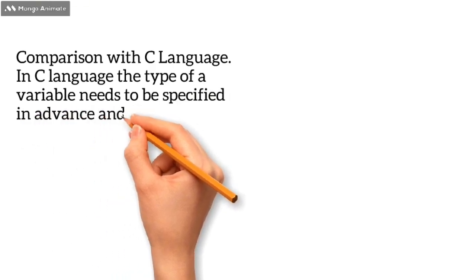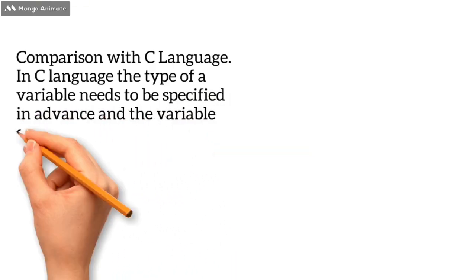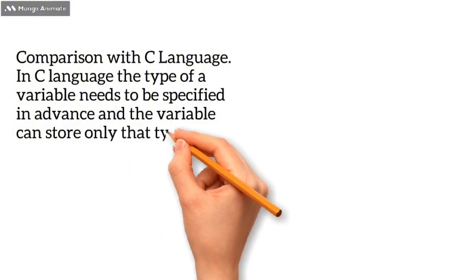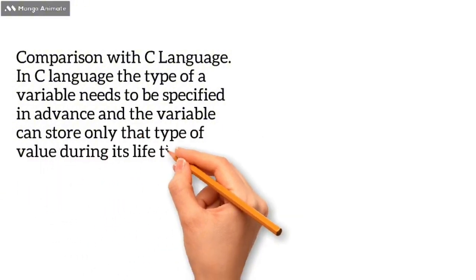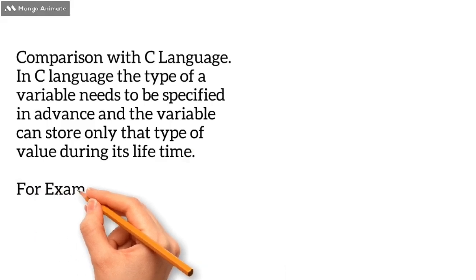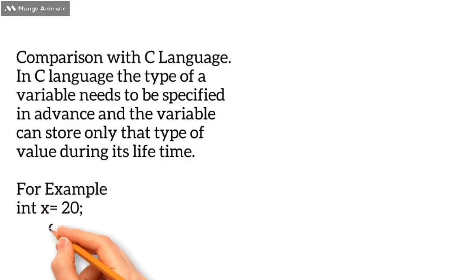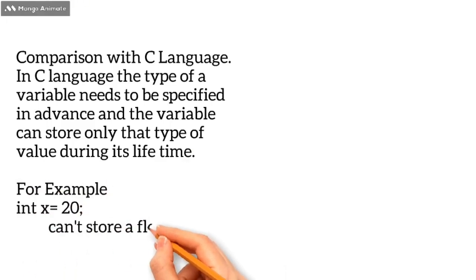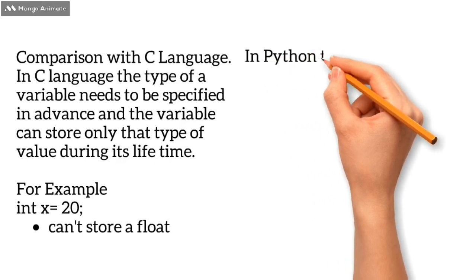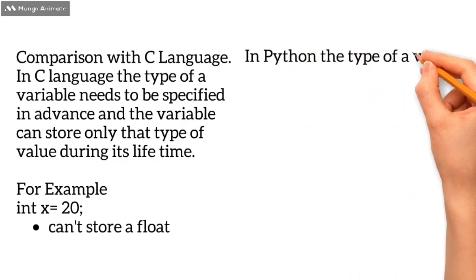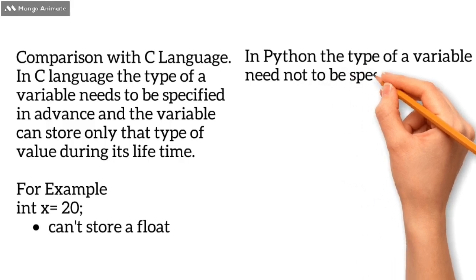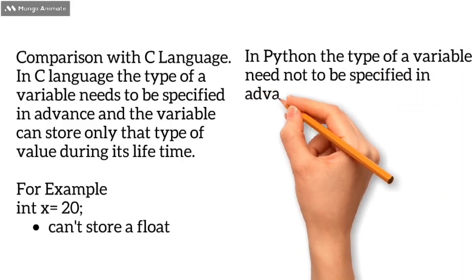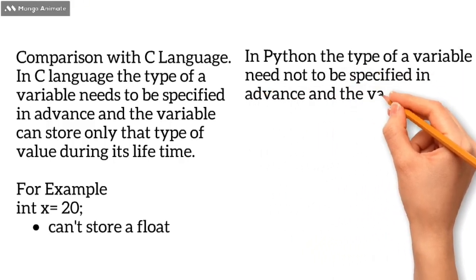But in Python variables, we don't need to specify the type. In C language, if we declare integer type, we cannot store floating point in it because it is integer type.